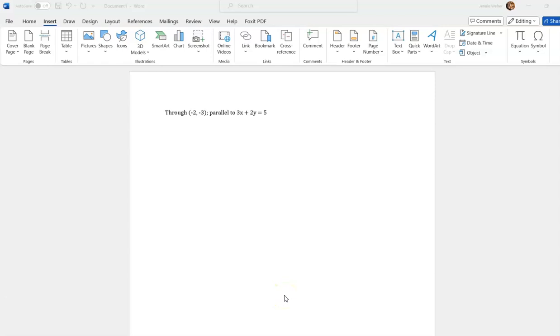We're asked to find the equation of the line through the given point and parallel to this given line. So to find the equation of any line, we need two things: we need slope and we need a point. I have a point, but I need to find the slope from the parallel line.